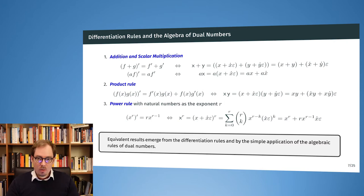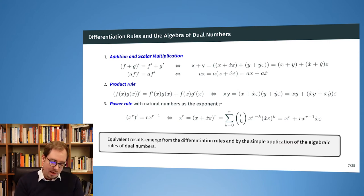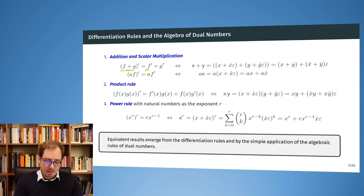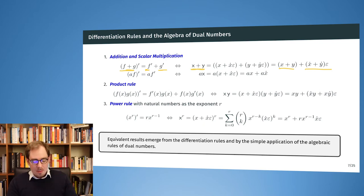Every time you see x or y in sans-serif font, it denotes a dual number containing a primal part and a derivative part, with the rule ε² = 0. Now let's see which structure follows. On the left side we have differentiation rules; on the right side we see how these correspond to arithmetic of dual numbers. For addition: the derivative of f + g equals f' + g', and adding two dual numbers simply adds both primal parts and both derivative parts.